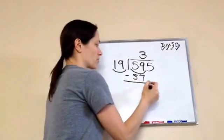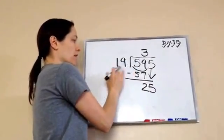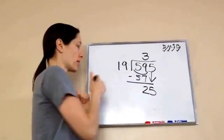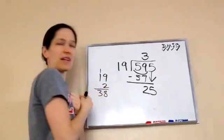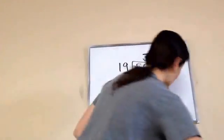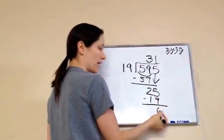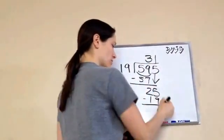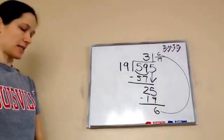We subtract and then bring down the 5, giving us 25. How many times will 19 go into 25 without going over? Only once — because 19 times 2 is 38, which would go over. So it's 1. One times 19 is 19, and we get 6 left over — remainder 6. Or as a mixed number, that's 31 and 6 nineteenths.